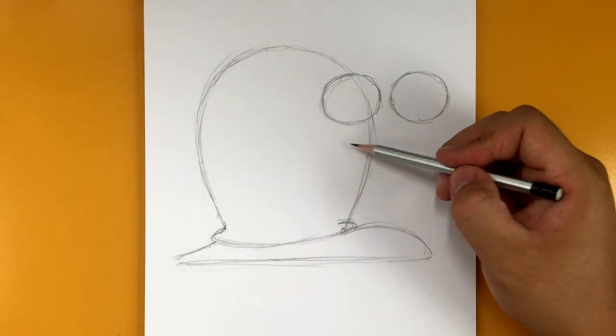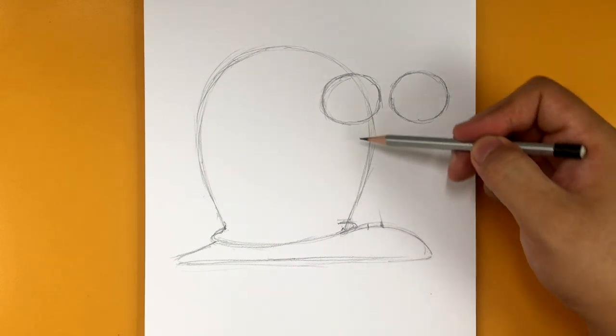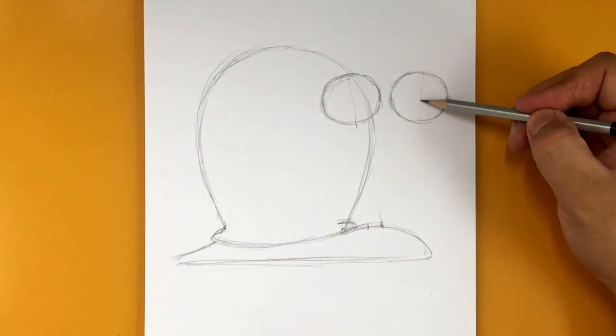There you go. Here and here. That's where you want. Okay. So here's kind of like the center of that circle. Here's the center of this circle.